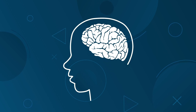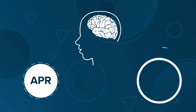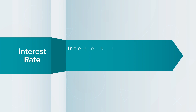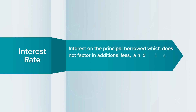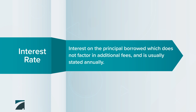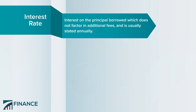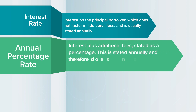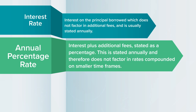Here is how to remember interest rate, APR, and EAR. Interest rate is the interest on the principal borrowed, which does not factor in any additional fees and is usually stated annually. Annual percentage rate is the interest plus additional fees stated as a percentage. This is stated annually and therefore does not factor in rates compounded on a smaller time frame.